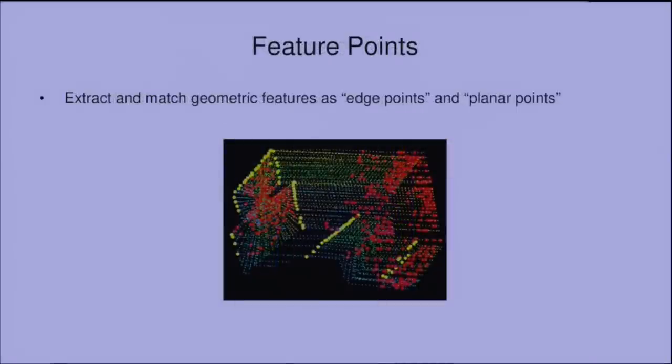In both steps, we use feature points as edge points and planar points. After we extract these points, we find the correspondences in another point cloud. For an edge point, we find an edge line segment. And for a planar point, we find a local planar surface. And the motion estimation is to minimize these overall distances from the features to their correspondences.